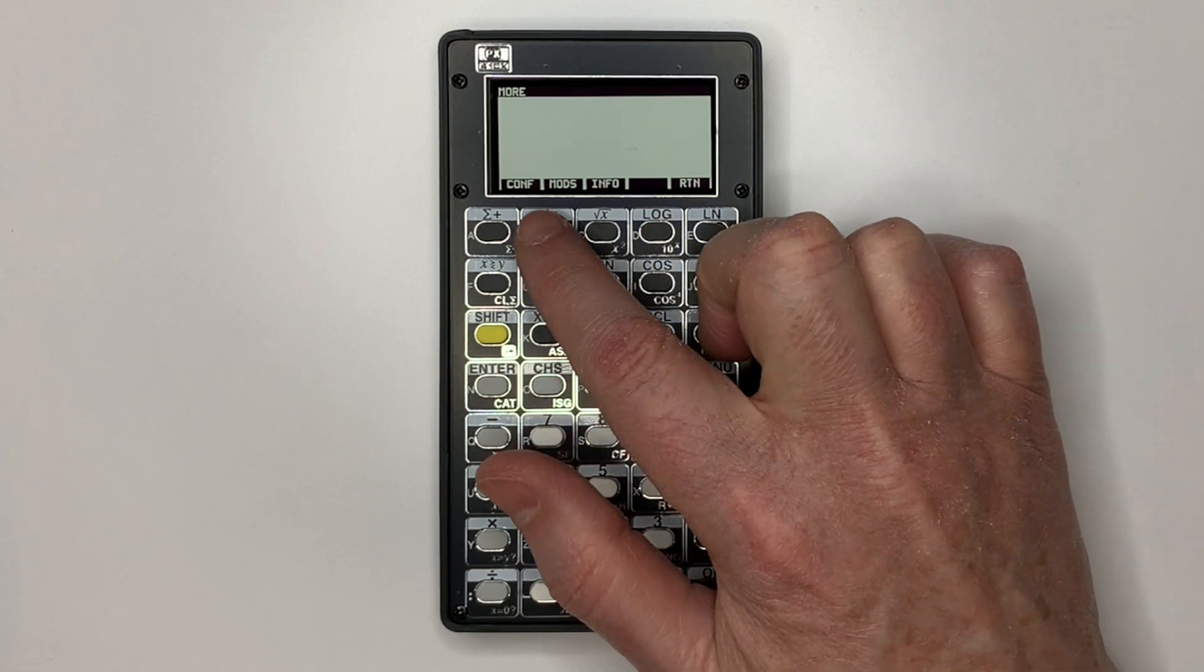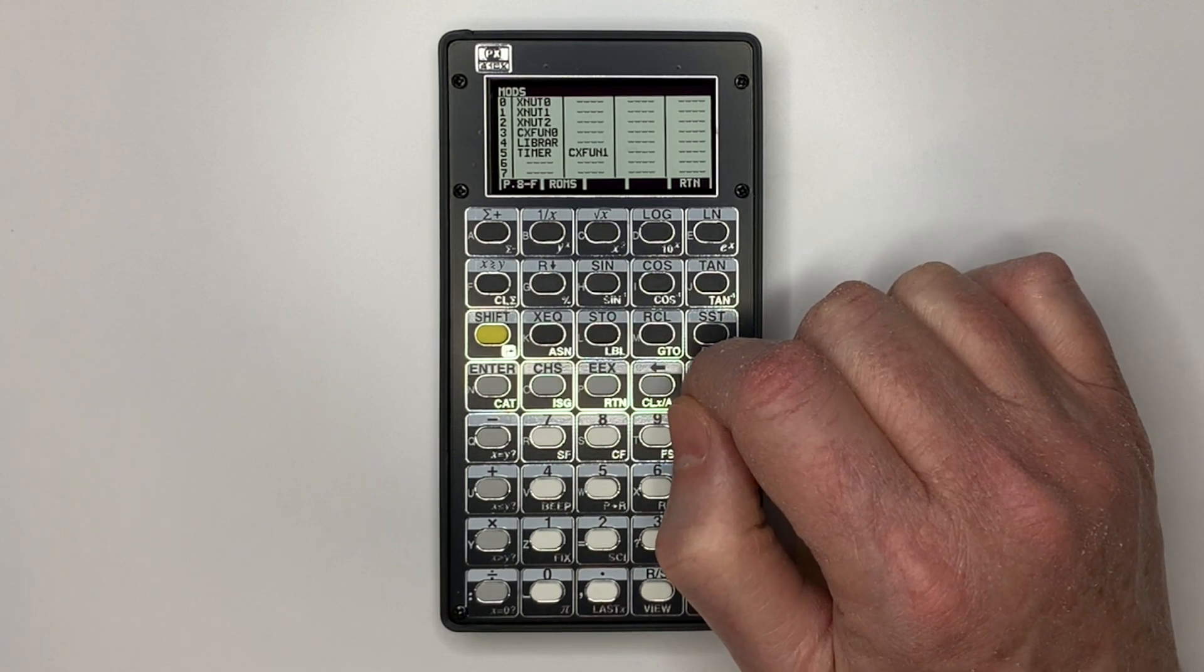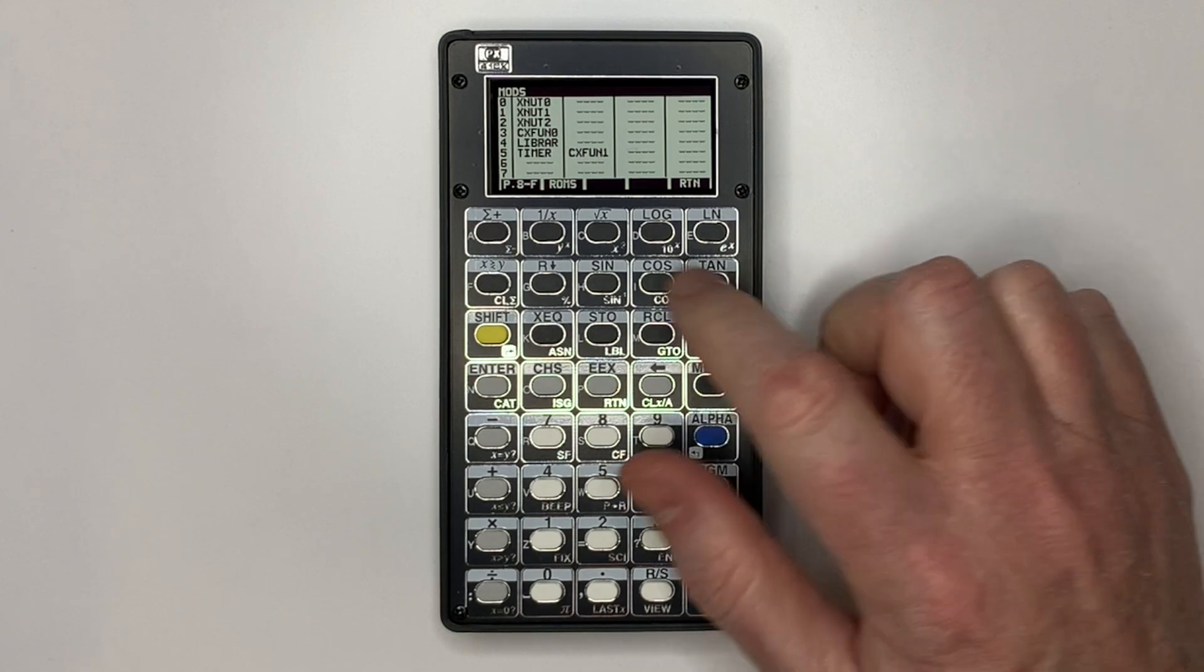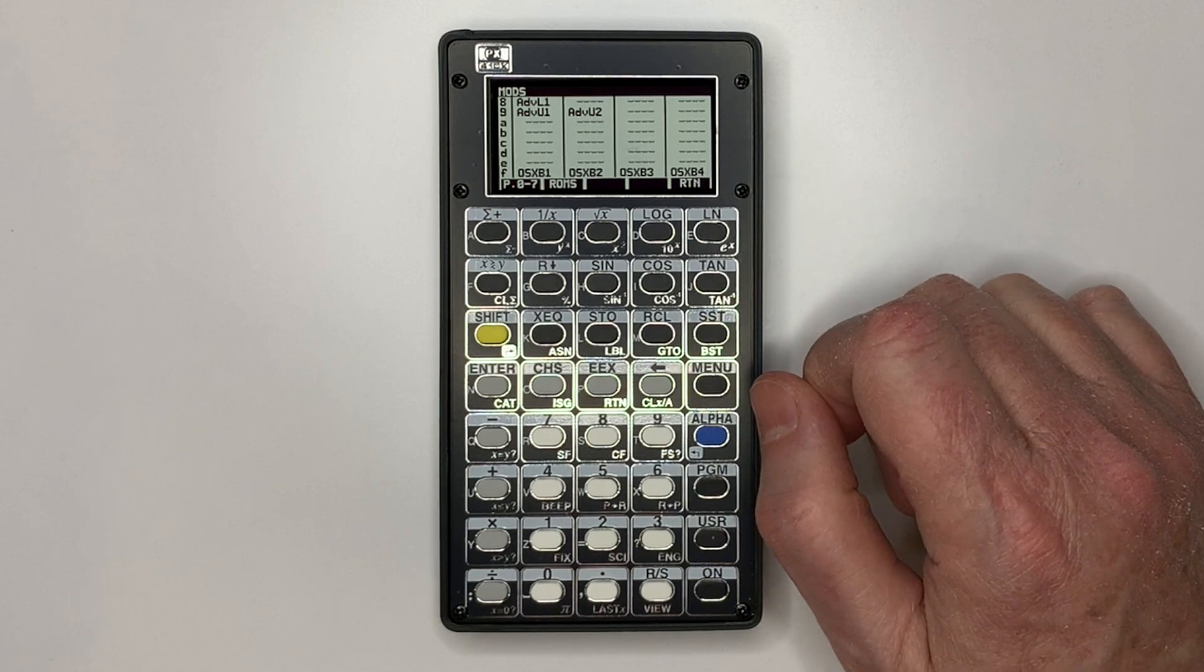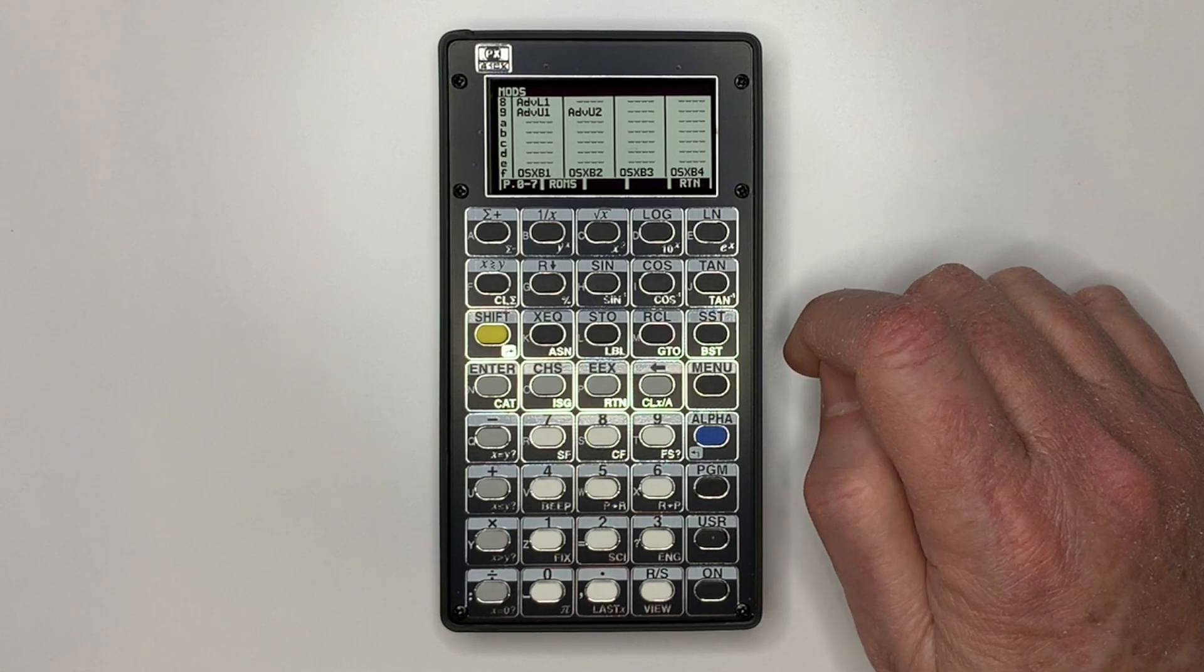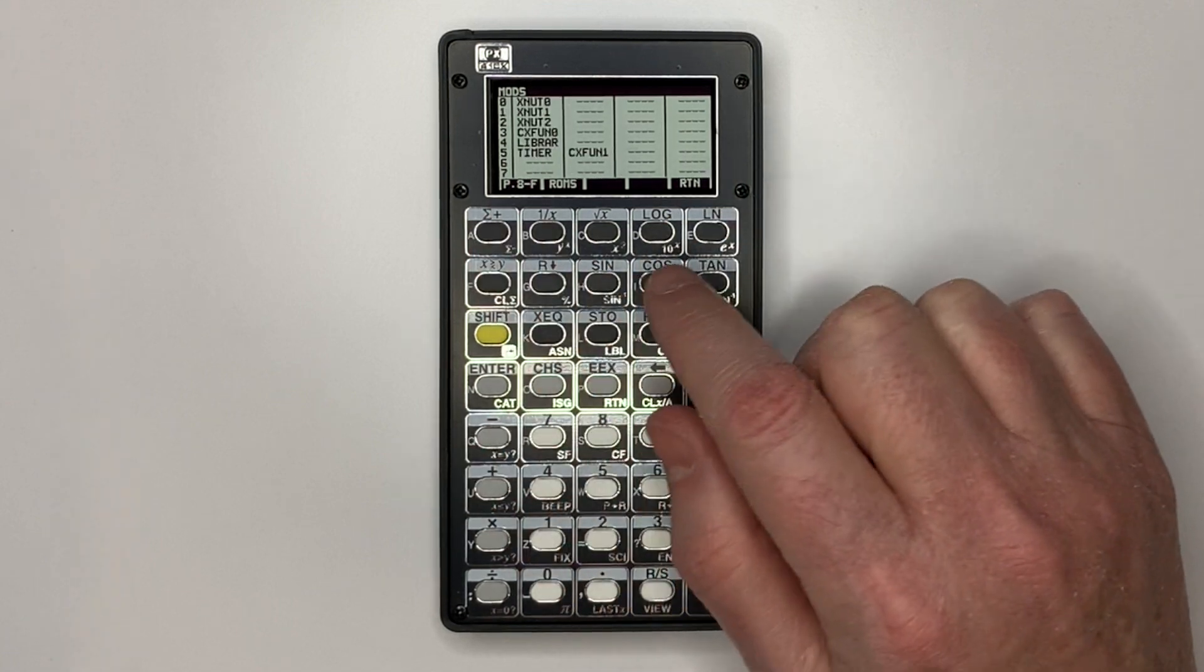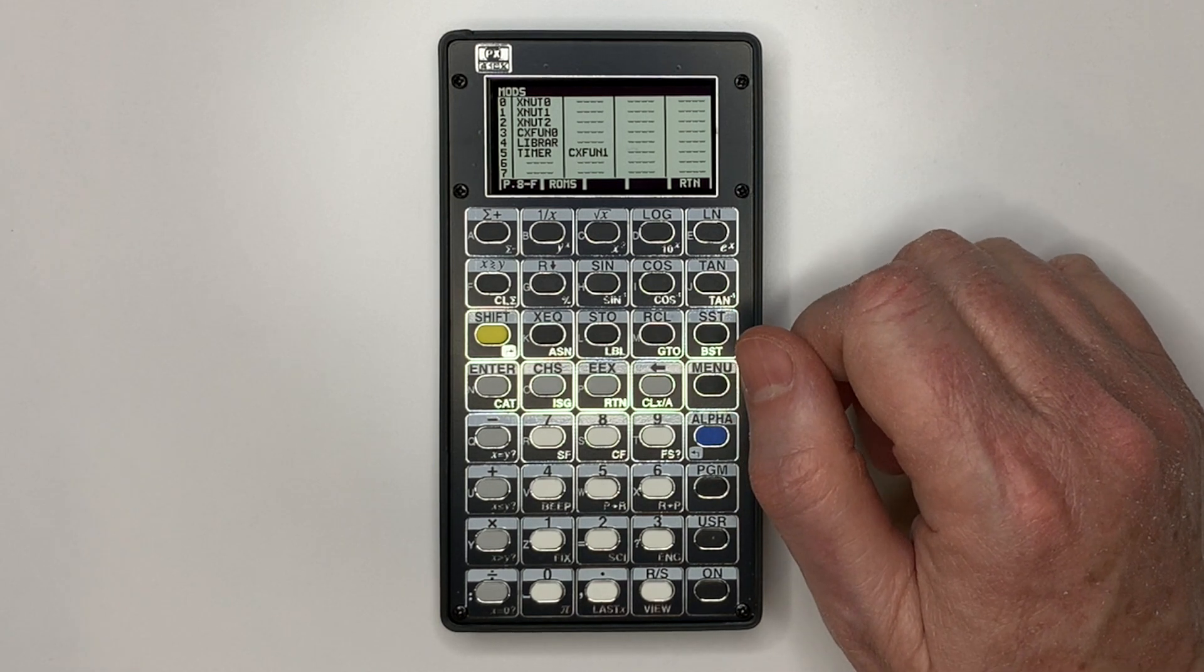In modules, we can see what's loaded in memory. The operating system is installed. On the next pages, you can see the Advantage module and the AMC OSX module are installed. Library 4 is also installed, which is required by the AMC OSX module.